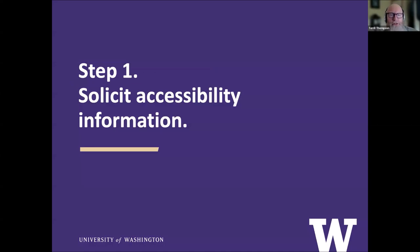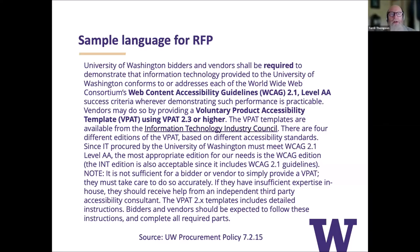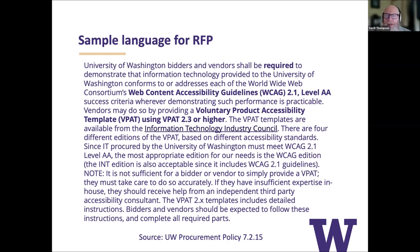Step one: solicit accessibility information. There's sample RFP language on that website. It states that a vendor's IT product needs to comply with the Web Content Accessibility Guidelines 2.1 Level AA. We've actually said this for a long time — it's the standard we had come up with, and the state of Washington had adopted it for all state agencies. Now the ADA rules have adopted the same standard, so nothing has changed.